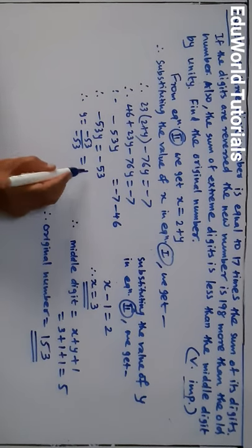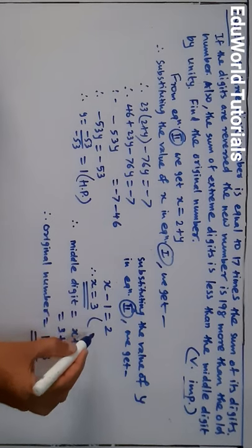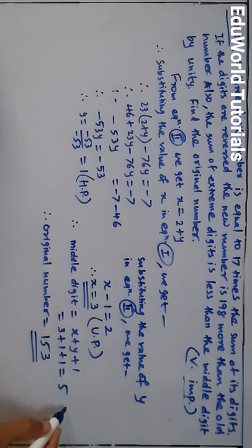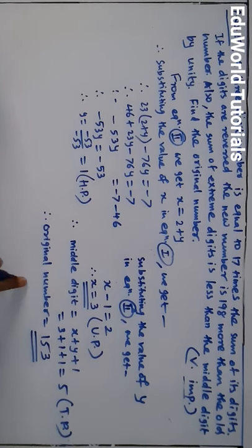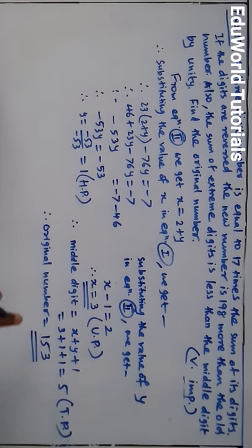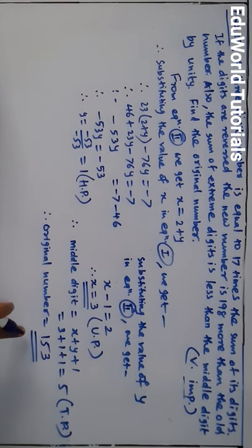To summarize: y is the hundreds place (HP), x = 3 is the units place (UP), and 5 is the tens place. Writing them in order — 1, 5, 3 — gives the original number 153, as shown in your textbook. You can verify: reversing 153 gives 351, which is indeed 198 more than 153.